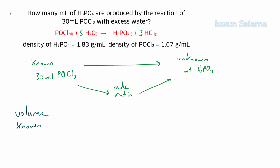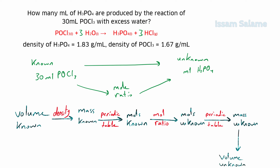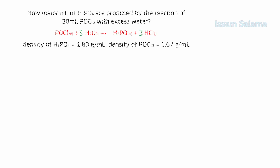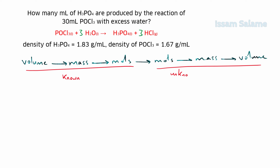We start by converting the volume of the known quantity to mass using density, then mass to moles using the periodic table, then moles to moles using the mole ratio, then moles to mass using the periodic table again, and finally mass to volume using density. In summary, there are five conversions: volume→mass, mass→moles, moles→moles, moles→mass, and mass→volume.